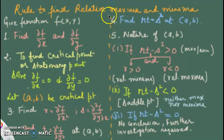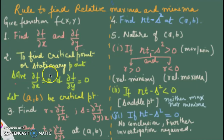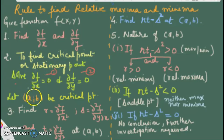Now let's discuss the method to find relative maxima and relative minima for a function of two variables. The first step is to find the partial derivatives of the given function with respect to x and y. Then we find the critical points, or stationary points — these are the points which might be maxima, minima, or neither. To find them, we solve the two equations: ∂f/∂x = 0 and ∂f/∂y = 0. The common solutions give us the critical points.